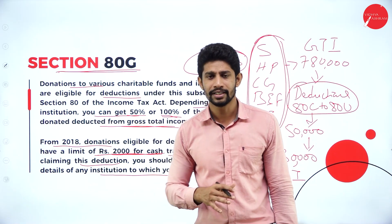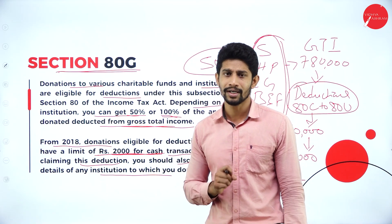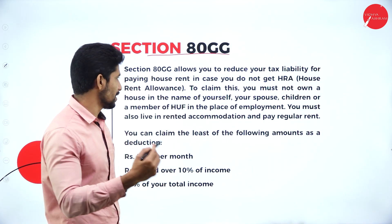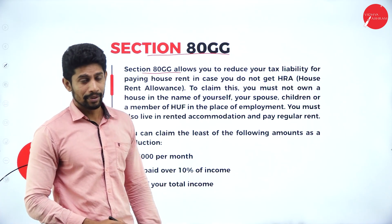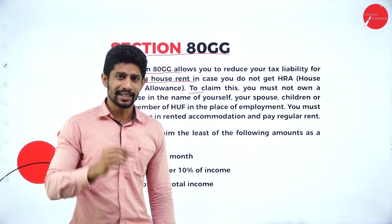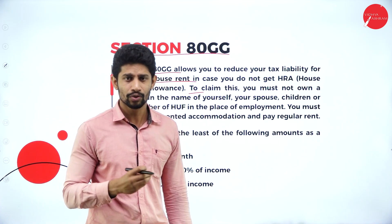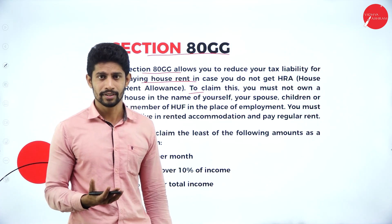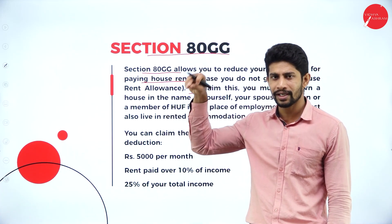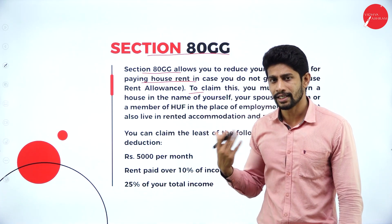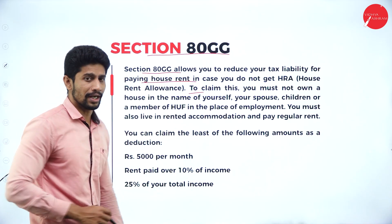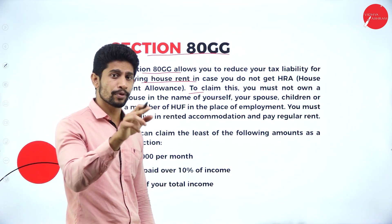Section 80GG allows you to reduce your tax liability for paying house rent in case you do not get HRA from your employer. Section 80GG gives the deduction to a particular individual or HUF with respect to house rent paid. If you are working in a company and your company is not providing HRA, but you are living in a rented house and paying rent, whatever rent you pay can be claimed as a deduction under Section 80GG from your gross total income.